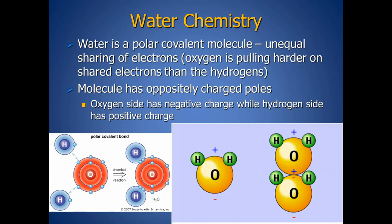I want to begin by looking at the chemistry of a water molecule. Water is what is called a polar covalent molecule. A covalent chemical bond is the sharing of electrons. In the case of a water molecule, one hydrogen brings one electron and the oxygen brings one electron to the table, and they share that pair. The other hydrogen and oxygen do the same — that's a covalent bond.